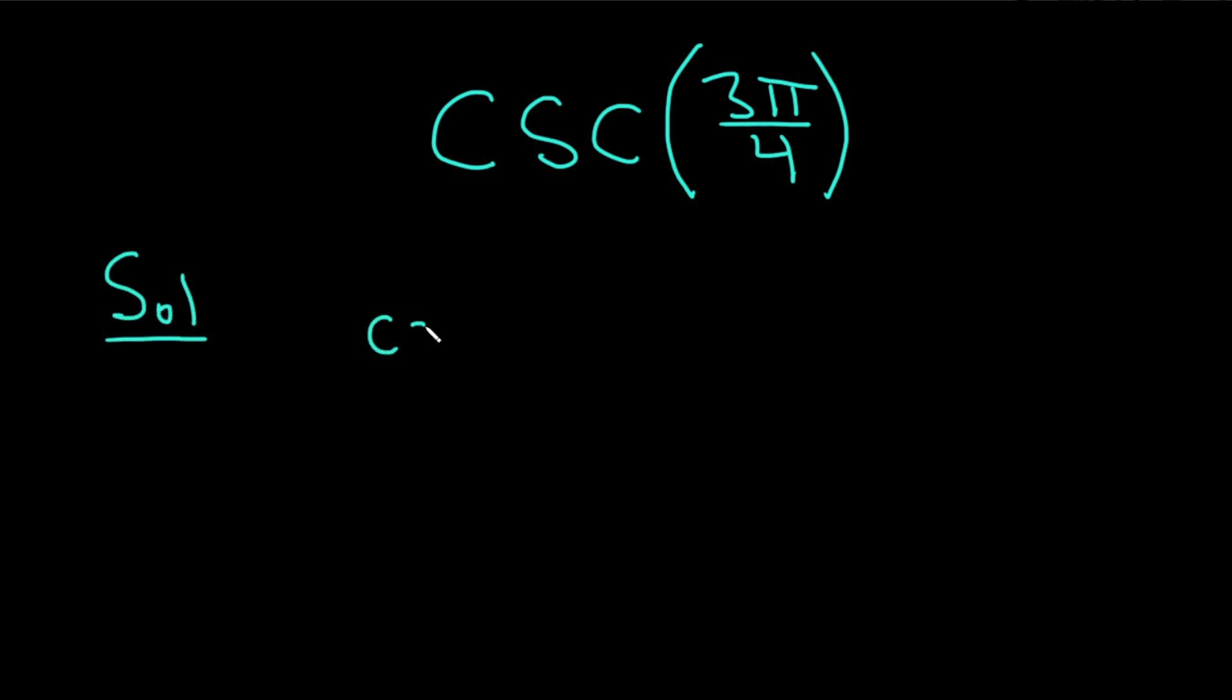So the cosecant of 3π over 4, this is the same as 1 over the sine of 3π over 4. This is equal to 1 over, and you just have to know what the sine of 3π over 4 is.